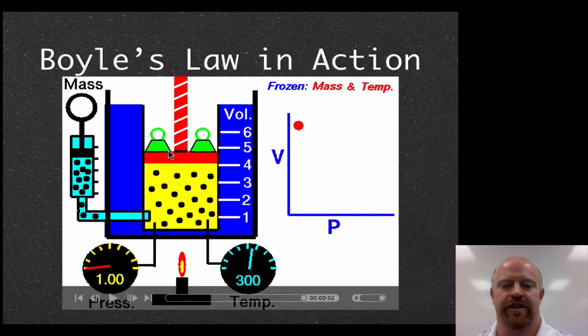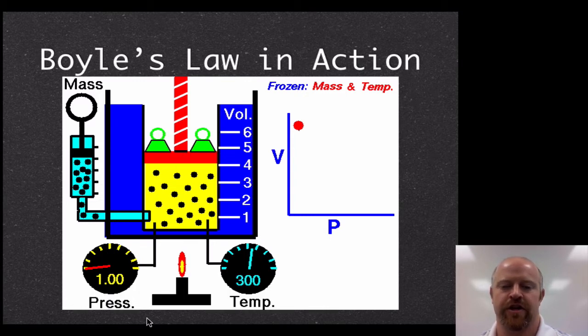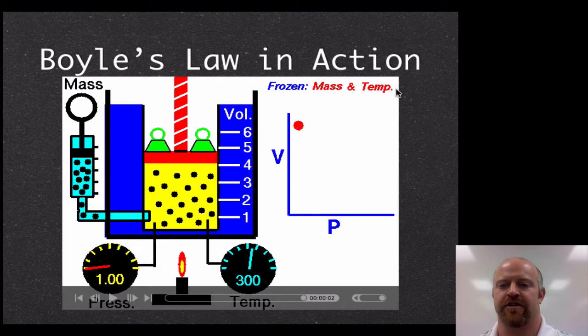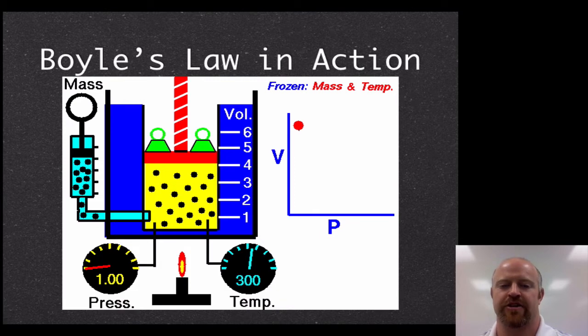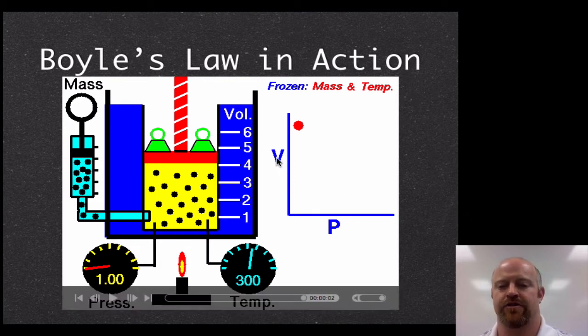Let's take a look at his law in action. What we see here is if you imagine this being a cylinder and this be a piston of some sort, the mass of particles is identified right here and we're going to keep that constant. We have our pressure over here in atmospheres and our temperature over here in kelvins and these little weights that we can put on top of the piston to increase the amount of pressure pushing down.